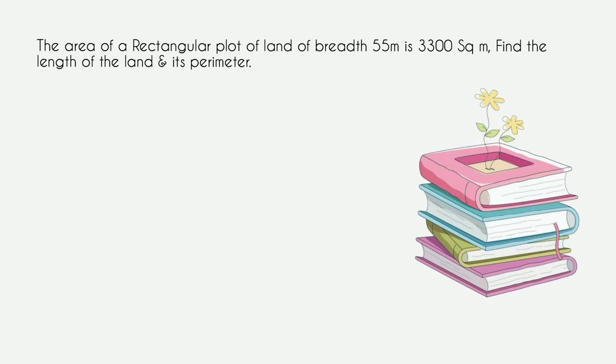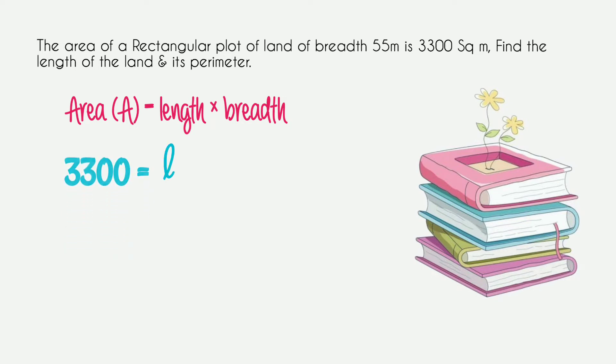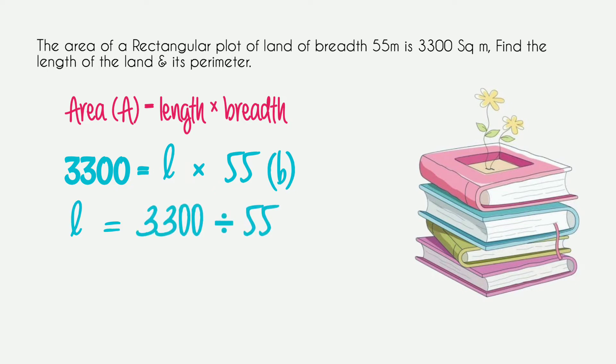We write down the area formula: area equals length into breadth. We put the values — area is 3300, breadth is 55, and length is unknown. We take the length to the left side and divide 3300 by 55. Multiplication becomes division and we get the length as 60 meters.